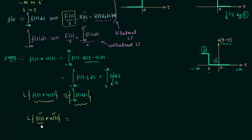We have already assumed the Laplace transform of f(t) to be F(s). The Laplace transform of the unit step signal u(t) is the standard result 1/s. Therefore, the Laplace transform of f(t) convolved with u(t) equals F(s)/s, which matches our stated result.